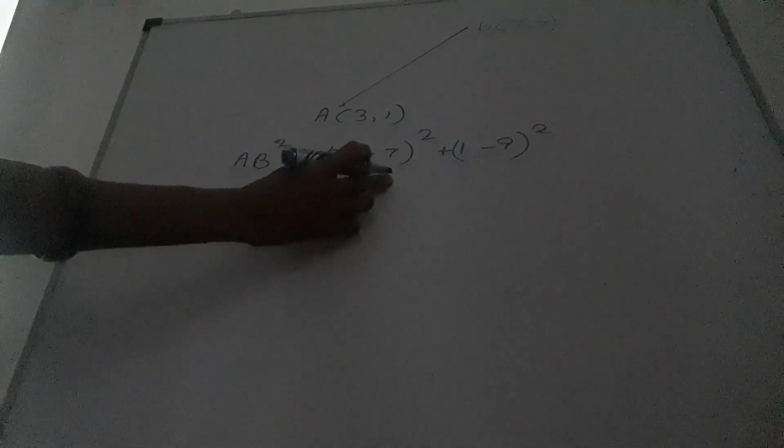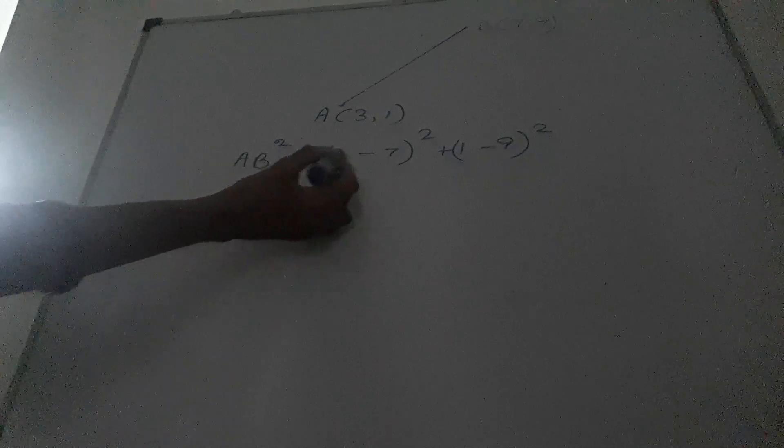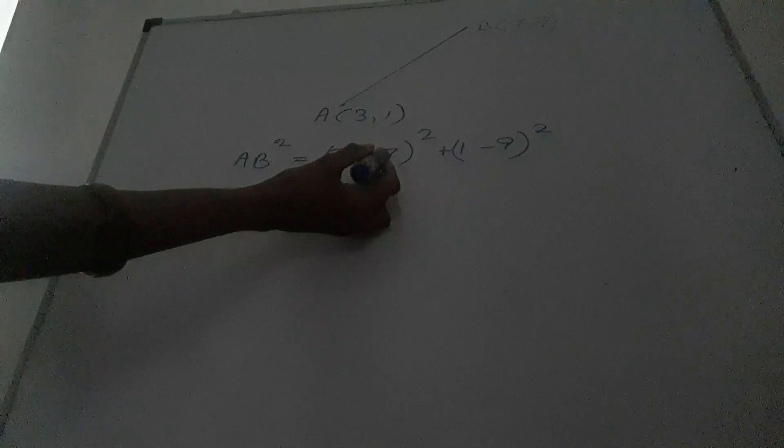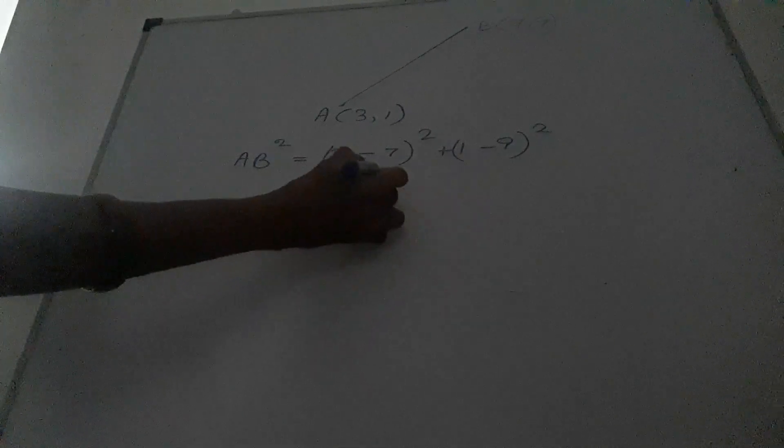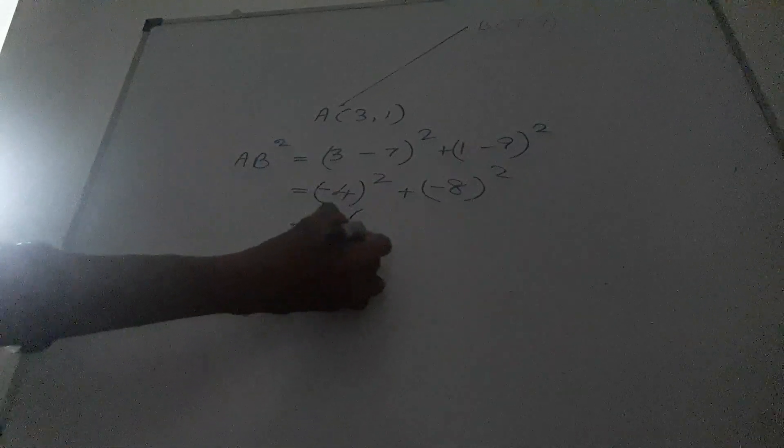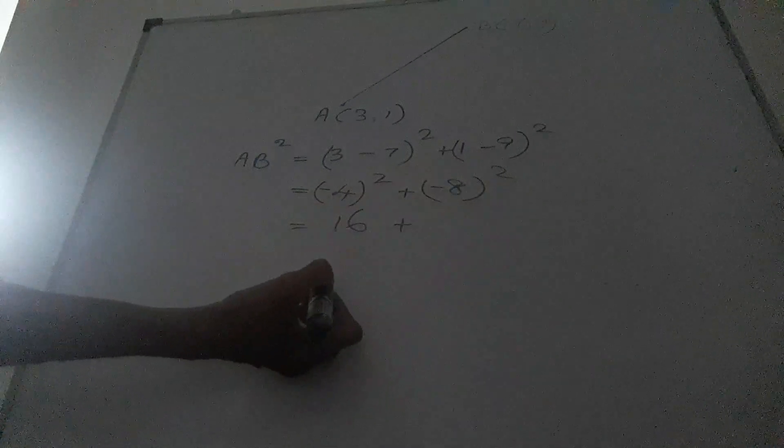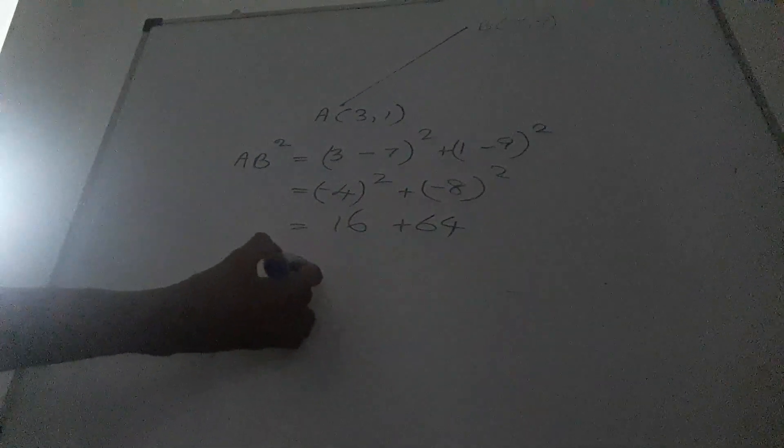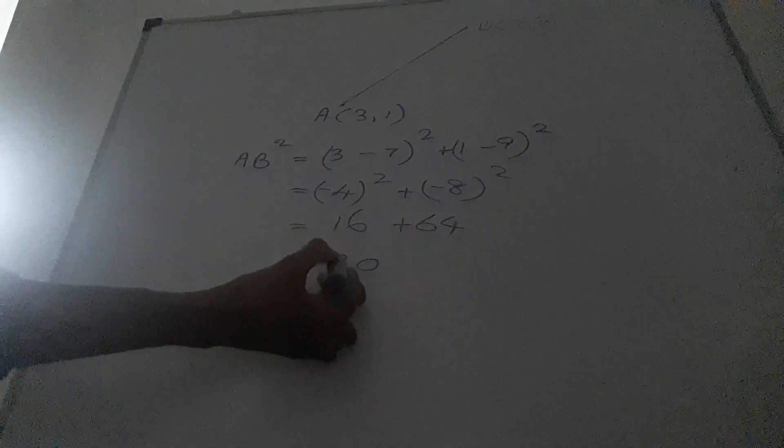A is the point (3,1) and B is the point (7,9). Find the length of AB. AB squared is equal 3 subtract 7 square plus 1 subtract 9 square. 3 subtract 7, there are different signs, positive 3 subtract from negative 7, negative 4 square plus 1 subtract from negative 9, negative 8 square. 4 square this is equal 16 plus 8 square this is equal 64. Addition is equal 80.